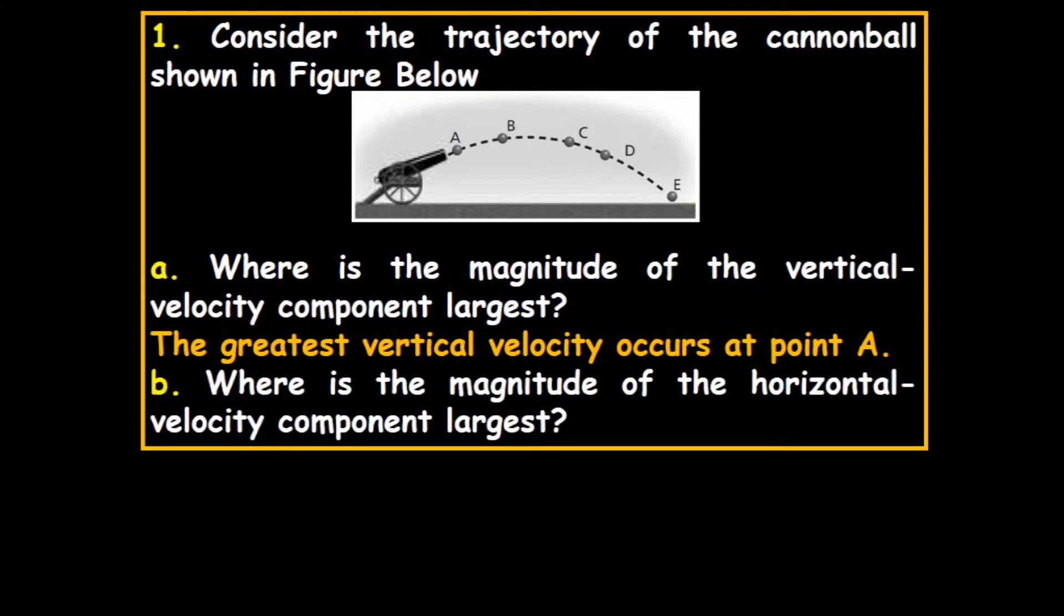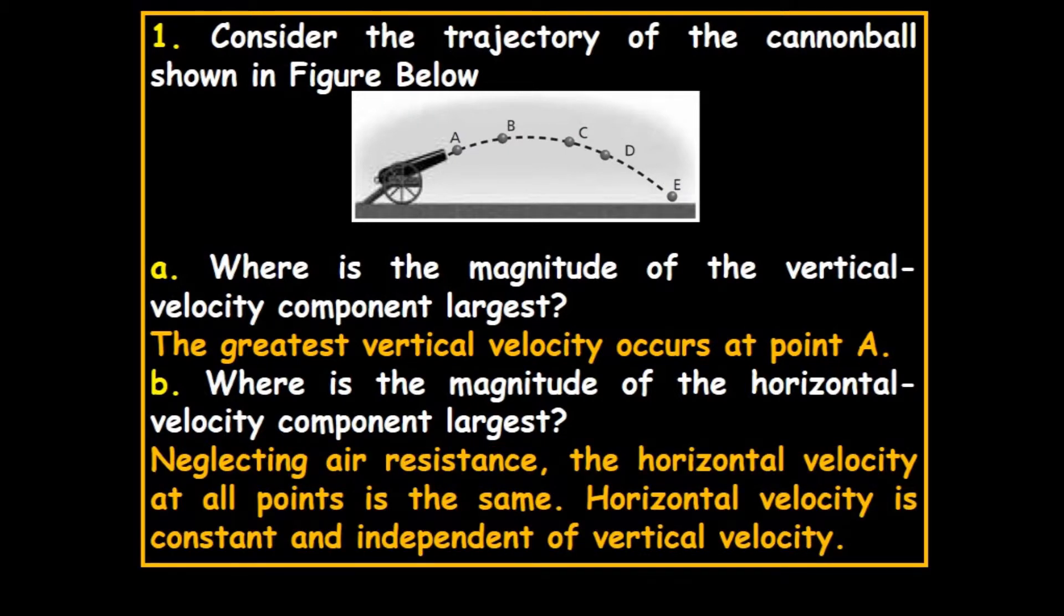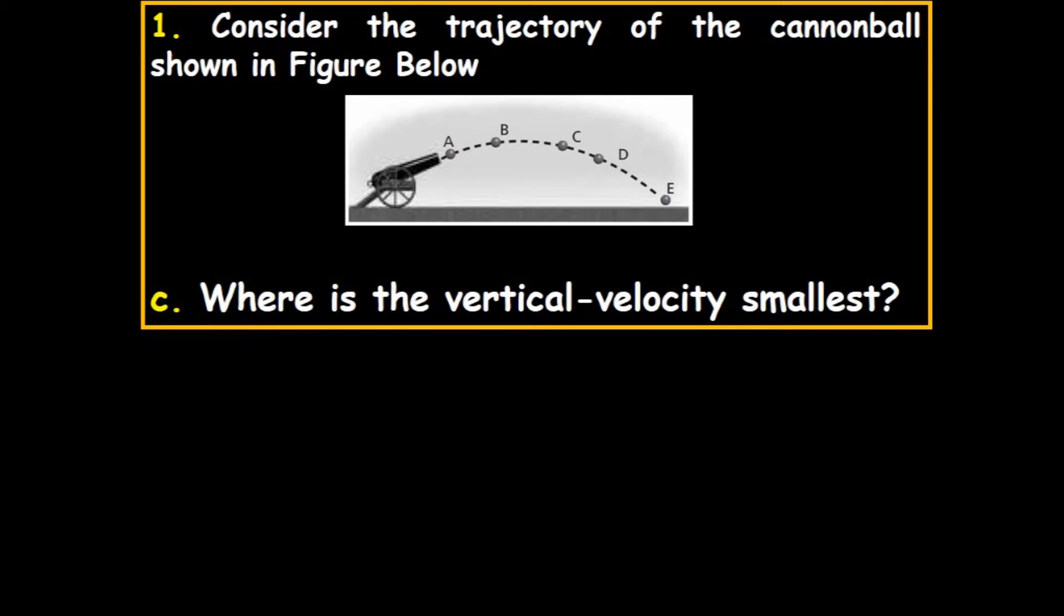Next, where is the magnitude of the horizontal velocity component the largest? Well, the horizontal velocity is constant, so it's neither high nor low. Neglecting air resistance, the horizontal velocity at all points is the same. Horizontal velocity is constant and independent of the vertical velocity, which is governed by gravity.